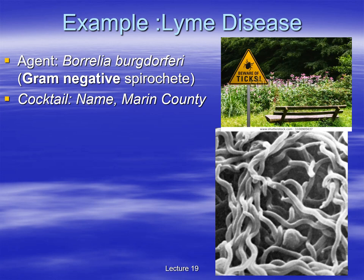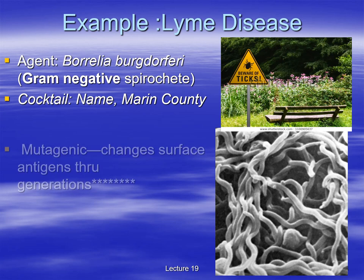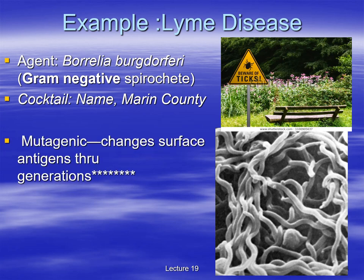A little background on the name: Borrelia burgdorferi was discovered by a scientist in Montana named Willy Burgdorfer, so they named the horrible bacterium after him — his name forever synonymous with pain and suffering. There are parts of California where this disease is endemic; the main one is Marin County, just north of San Francisco. If you go hiking there — beautiful area — beware of the ticks, because that's the vector for Lyme disease.